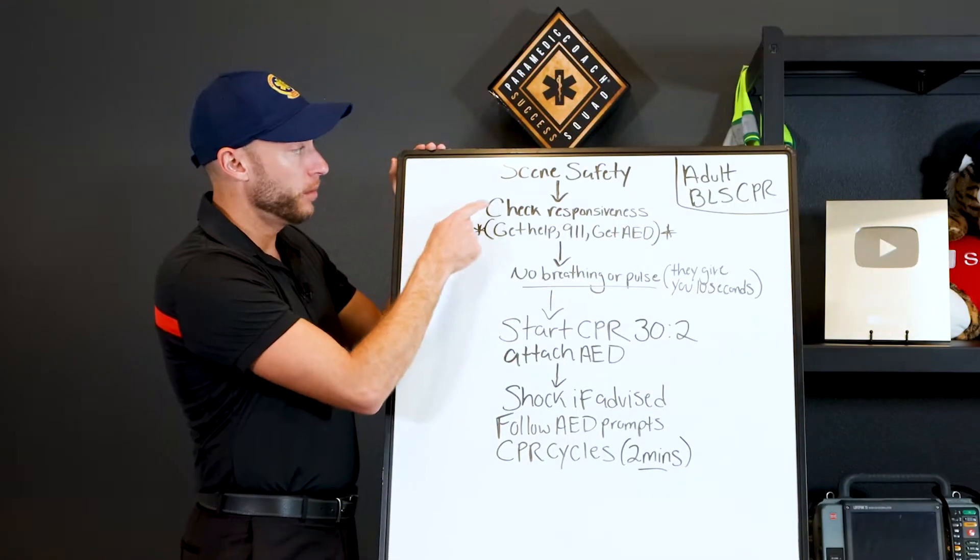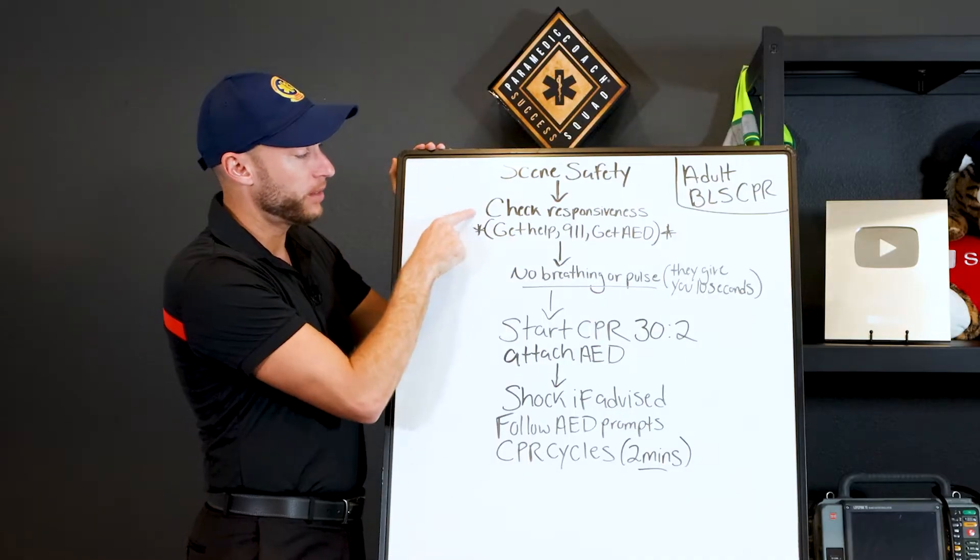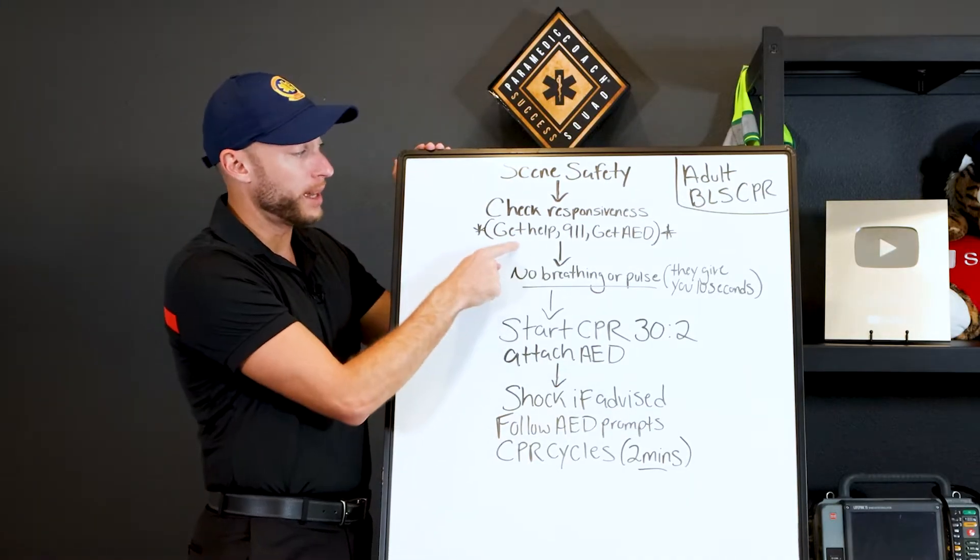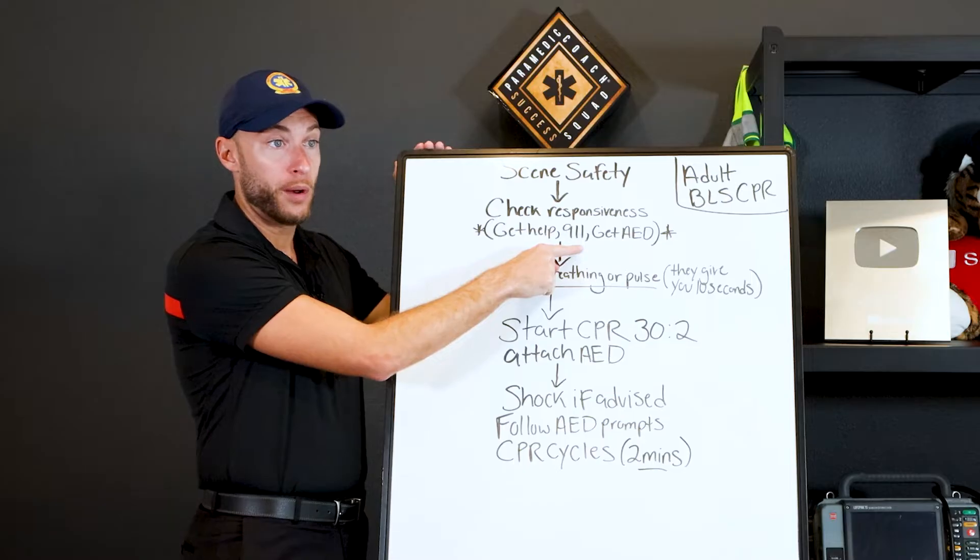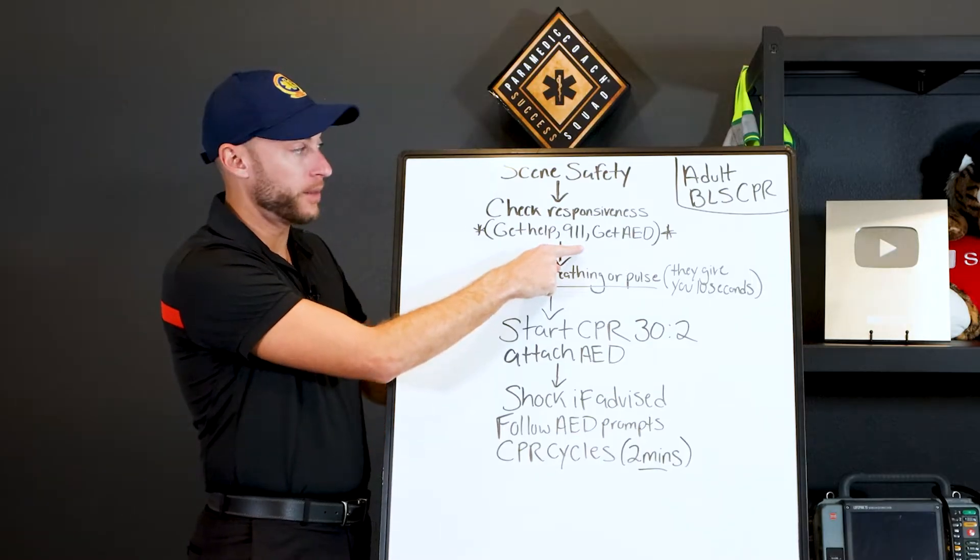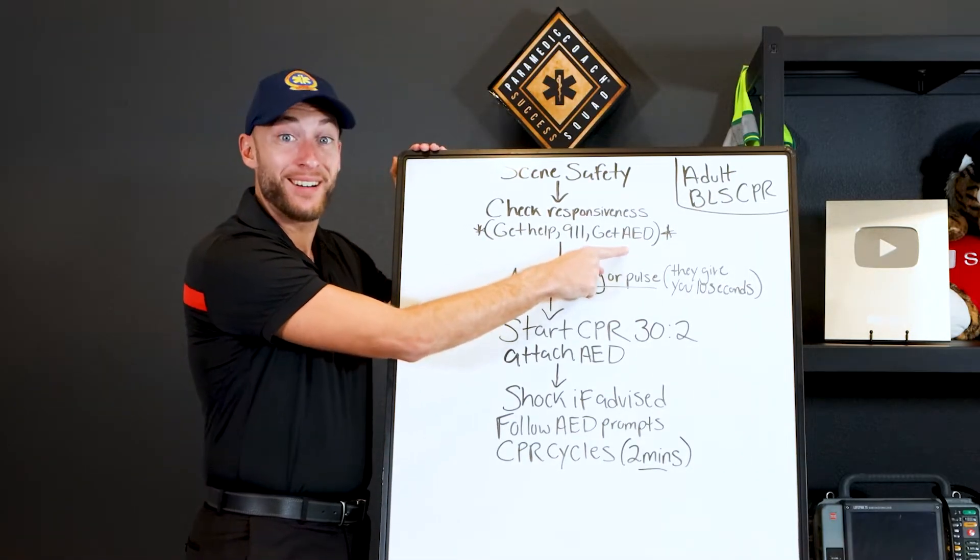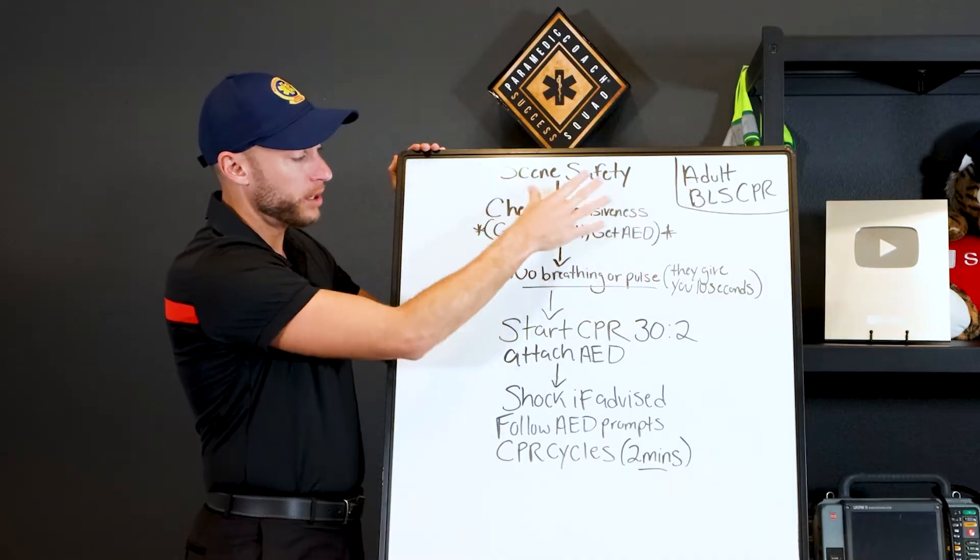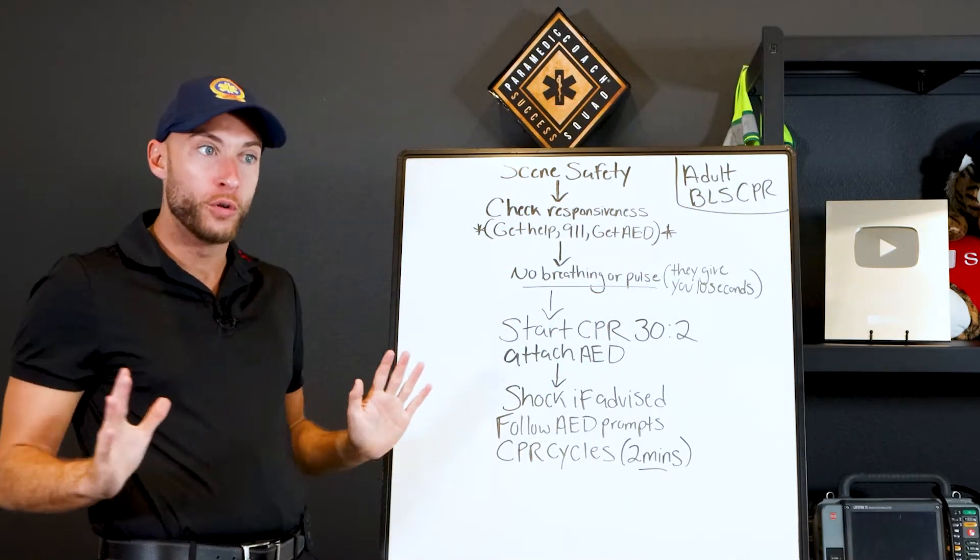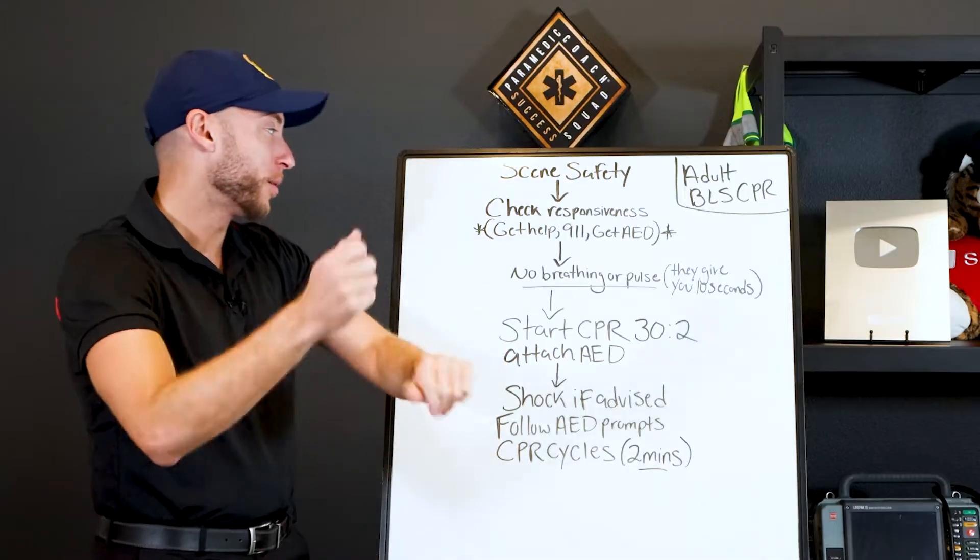What if you're out at a restaurant or at the mall for example, and someone drops? Well this is what you would do. Scene safety, check responsiveness. Then what would you do? Shout and get help. You would call 9-1-1, probably put your phone on speaker next to the victim and then tell someone else to go get an AED while you continue on. Okay so now we're gonna go back to EMS mode.